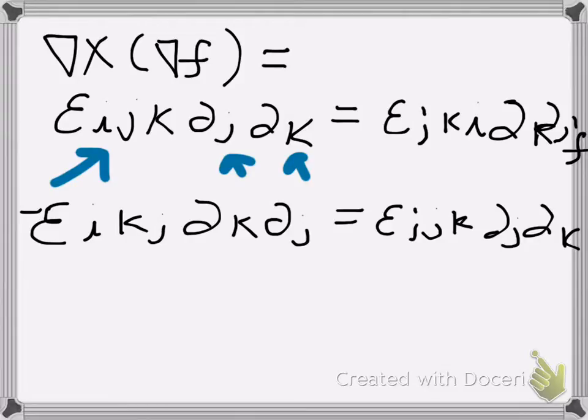Sorry, one more step. I got ahead of myself. So now I have that the negative, the one with Levi-Civita epsilon i k j, equals positive Levi-Civita epsilon i j k.